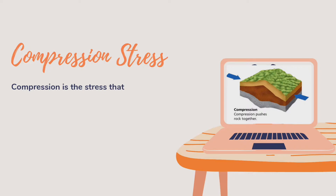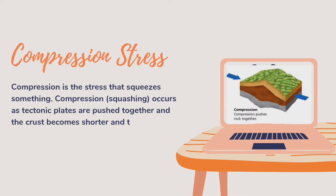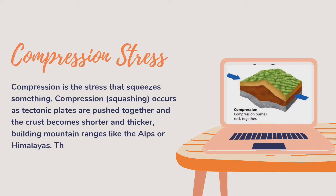First is compression stress. Compression is the stress that squeezes something. When tectonic plates are pushed together, the crust becomes shorter and thicker, building mountain ranges like the Alps or Himalayas.